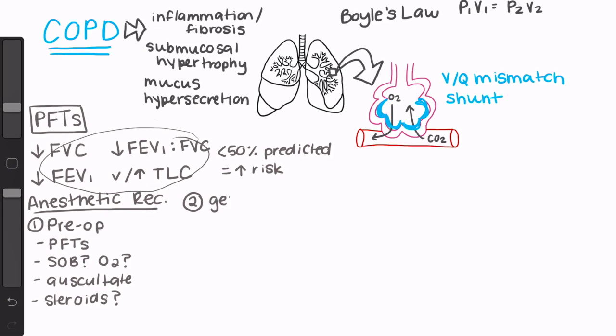Next, you have to weigh the risks and benefits of choosing regional versus general anesthesia for your patient's specific surgical situation. Ask yourself if the procedure can be done safely without general, but also consider how certain risk factors of regional techniques might affect this patient population differently. For example, a technique that causes weakness to accessory respiratory muscles or has a risk for hemidiaphragmatic paralysis could be a poor choice for this patient population.